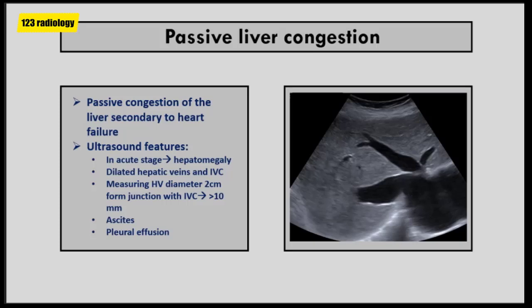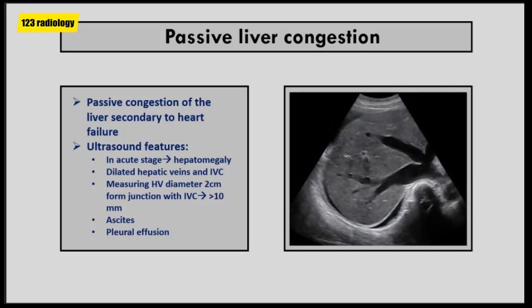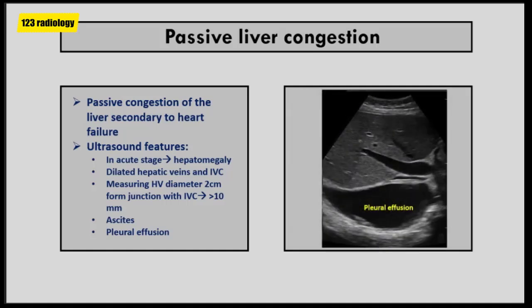Passive hepatic congestion is passive edema of the liver secondary to vascular stasis as a complication related to heart failure. In the early stage, the liver is enlarged causing right upper quadrant discomfort. Ultrasound signs are dilated hepatic veins and dilated inferior vena cava — the dilated hepatic veins are well visible up to the periphery of the liver. The hepatic vein diameter can be measured 2 cm from the junction with the inferior vena cava; a diameter larger than 10 mm is considered abnormal. On Doppler examination, there is loss of normal respiratory variability of the hepatic veins. Ascites in variable amount and pleural effusion are also relatively frequent findings in patients with heart failure.